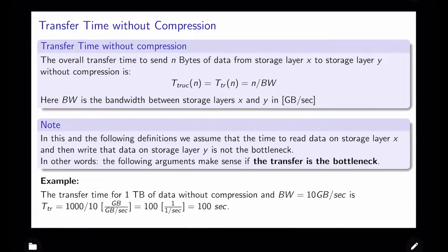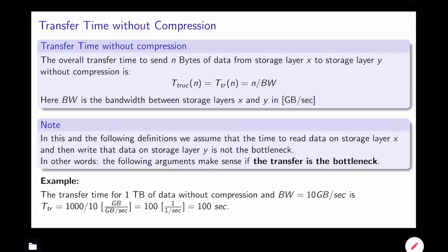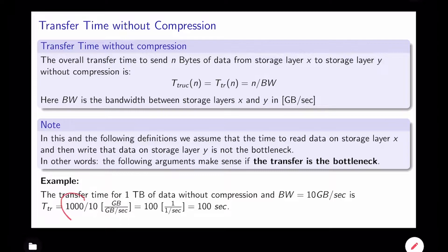We define the transfer time to send N bytes from storage layer X to storage layer Y without compression as N divided by the bandwidth BW. For example, with a bandwidth of 10 gigabytes per second and 1,000 gigabytes of data, you divide 1,000 by 10 and get 100 seconds. I'm concentrating here on the transfer between storage layers as the bottleneck, not reading from or writing to a storage layer.